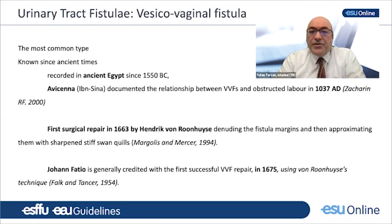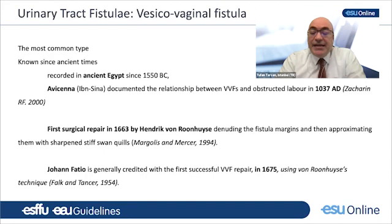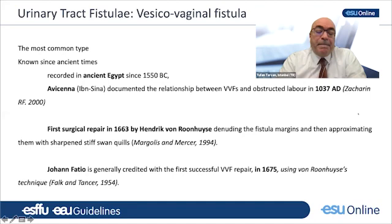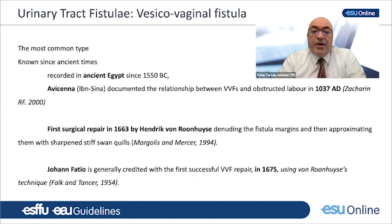Vesicovaginal fistula is the most common form of urinary tract fistula, known since ancient times — recorded in ancient Egypt since 1550 BC. Avicenna, also known as Ibn Sina, documented the relationship between vesicovaginal fistula and obstructed labor in 1037 AD. The first surgical repair was performed by Hendrik von Ronhuysse in 1663, who denuded the fistula margins and approximated them with sharpened stiff swan quills. John Fatio is generally credited with the first successful repair in 1675, using the same technique.